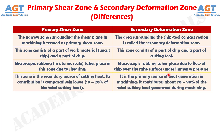Number 4: The primary shear zone is the secondary source of cutting heat. Its contribution is comparatively lower, 10-20% of the total cutting heat, whereas the secondary deformation zone is the primary source of heat generation in machining. It contributes about 70-90% of the total cutting heat generated during machining.